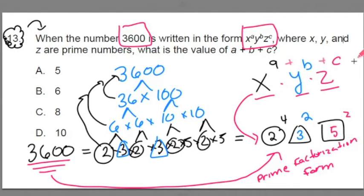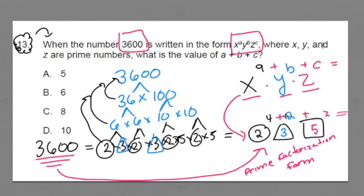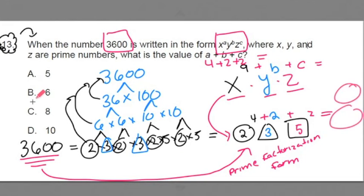And in this problem here, we're asked to add the exponents of this expression. We're going to be adding, since they line up with the exponents in these numbers here, we're going to add these values up. 4 plus 2 plus 2, which is what it's asking us to do. 4 plus 2 plus 2 equals 8. Answer C.